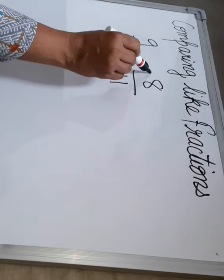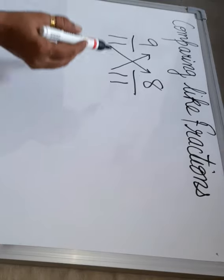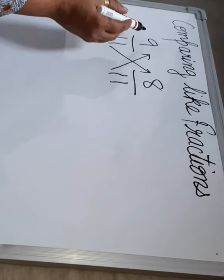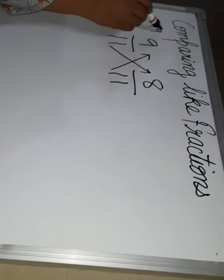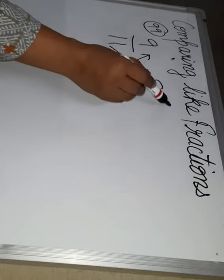Just cross multiplication. Cross multiplication. So 11 multiplied by 9, 99. 11 multiplied by 8, 88.